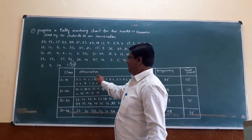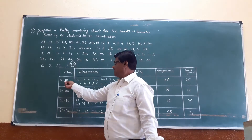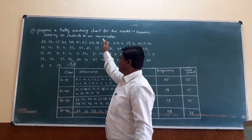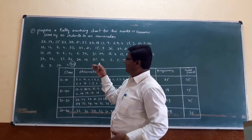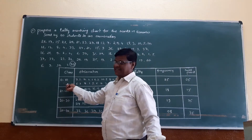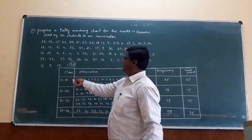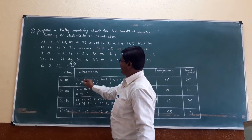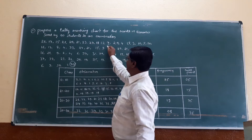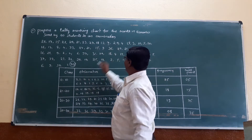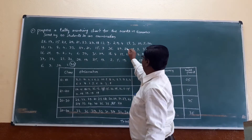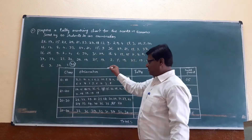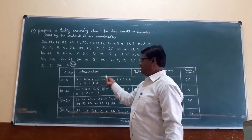The class 0 to 10 includes numbers between 0 and 10. The numbers in this range are: 7, 2, 9, 4, 8, 3. These are the observations for class 0 to 10.